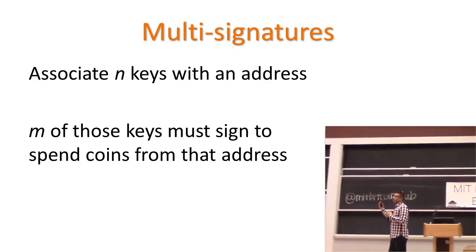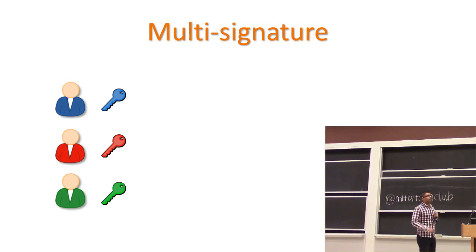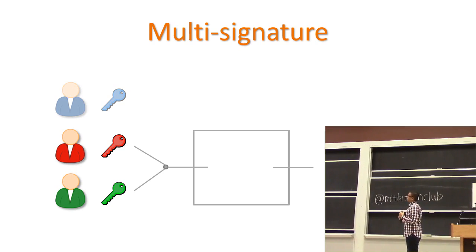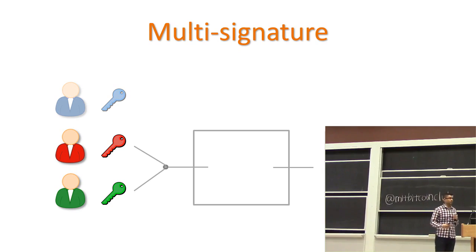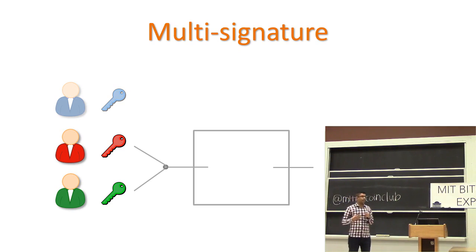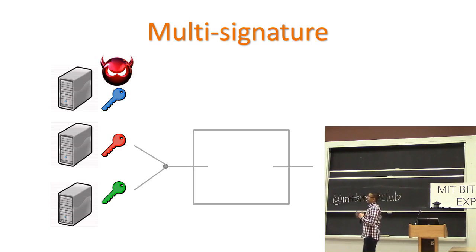What multi-sig allows you to do — two slightly different ways to use it. You can split those keys between different users, maybe different employees in your company. With a two-out-of-three multi-signature, for example, even if one of these people gets hit by a bus, leaves the company, or turns out to be malicious, you still have the assurance the other two can come together and construct a valid Bitcoin transaction while you recover. You can also think of it as three different devices — if one gets compromised by malware, the other two can still function normally.